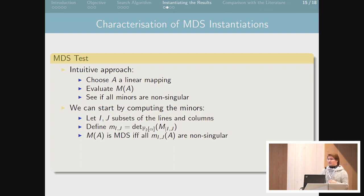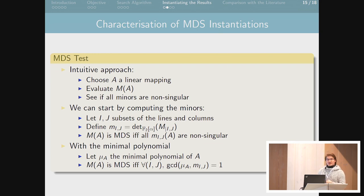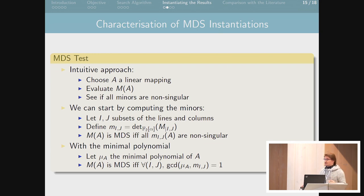We can go even further using the minimal polynomial of the linear mapping A, μ(A). The instantiation will be MDS if and only if the minimal polynomial is coprime with all the formal minors. This is very efficient because we compute all formal minors Mij once for the formal matrix, and then for each instance we try, we just compute its minimal polynomial and check if it's coprime with all the formal minors.